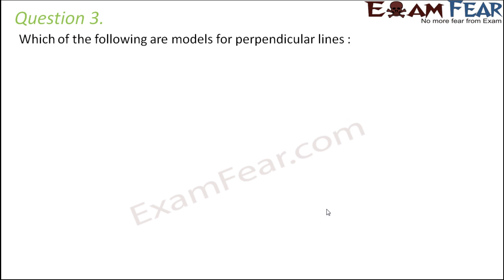Question number three. Which of the following are models for perpendicular lines? Now what do we mean by perpendicular lines? That means when two lines intersect each other at 90 degrees, they are said to be perpendicular on each other. Let's say there is one line like this, there is another line like this. So both the lines are intersecting at this point. And also the angle that they make at the point of intersection is 90 degrees. So we can say that these lines are perpendicular to each other.